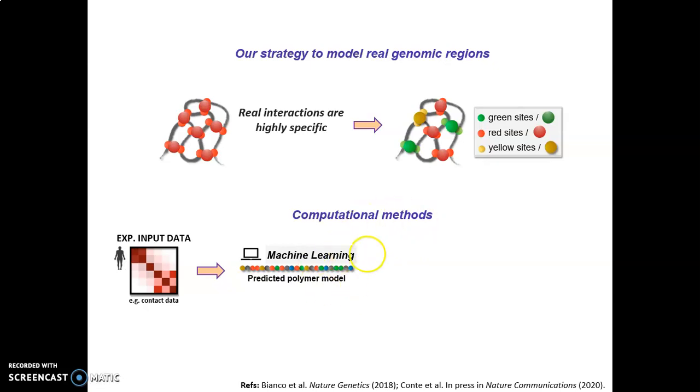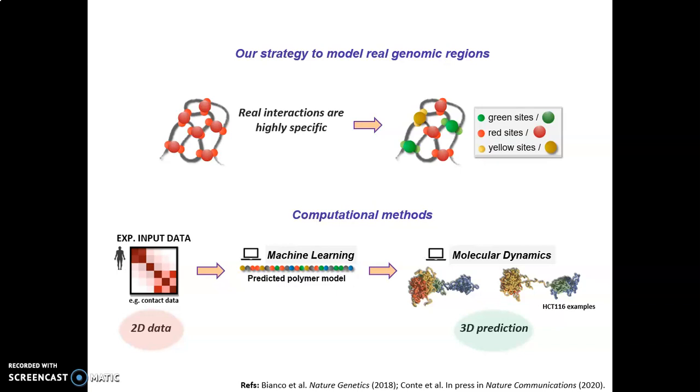Once obtained from machine learning our polymer model, we ran hundreds of independent molecular dynamics simulations of our polymer model to obtain an ensemble of distinct independent model 3D structures of the genomic region we are studying. Importantly, without entering into too many details, the input experimental data is typically a two-dimensional matrix containing the interaction probability between sites of the genomic region we are studying. While our final output, that is the inference of the 3D structures of the genomic regions we are studying, is a pure model prediction.